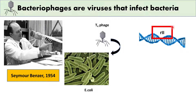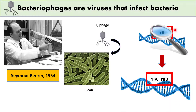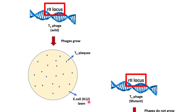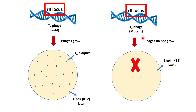Benzer identified two separate loci within the rII gene, which are called rIIa and rIIb. He observed that wild-type T4 phages grow on E. coli strain K12, but rII mutant strains are not able to grow on the E. coli strain.